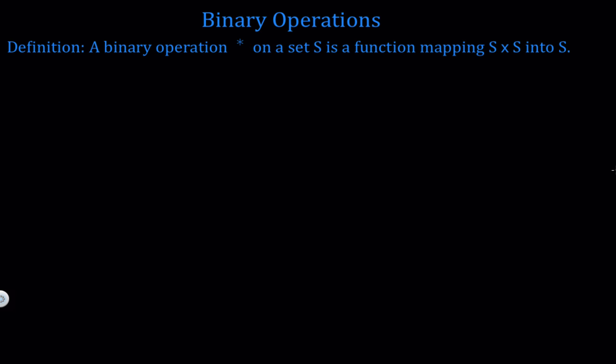The second thing to notice is that a binary operation is a function mapping S cross S into S. So anytime you have a binary operation, it has to map the ordered pairs in S cross S back into the set S. This definition can break down into two conditions that will help you decide if a function is in fact a binary operation on a set S. Let's look at these conditions.